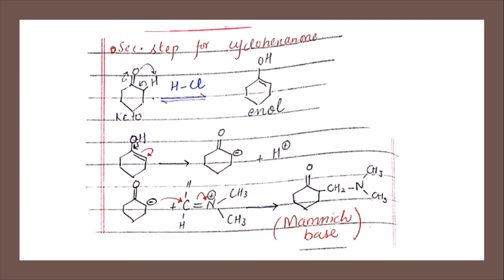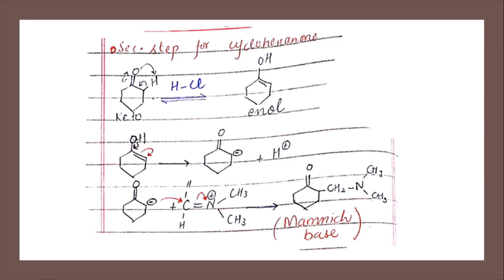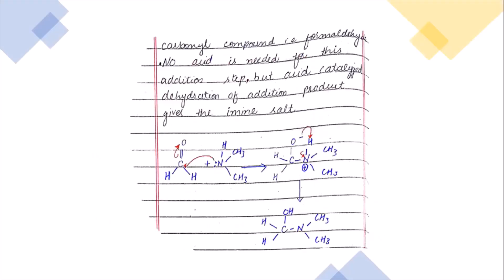Let's look at the cyclic example — suppose we have a ketone like cyclohexanone. The oxygen transfers a hydrogen, the electron density transfers through the ring to give the enol form, with OH present. In the next step the electron density transfers toward the oxygen, this bond forms, and we get a carbanion with H-positive. The Mannich base is then obtained by addition of the enol with the iminium salt. This was all about the Mannich reaction.